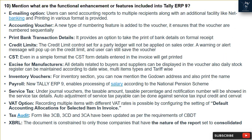Question 10: What are the functional enhancements or features included in Tally ERP9? E-mailing option: users can send accounting reports to multiple recipients, with additional facilities like net banking and printing in various formats. Accounting voucher: a new type of numbering feature is added to the voucher, ensuring vouchers are numbered sequentially. Print bank transaction details: provides an option to print bank details on formal receipts. Credit limits: the credit limit set for a party ledger will not be applied on sales orders; a warning message will pop up and the user can still save the voucher.